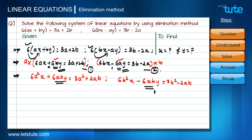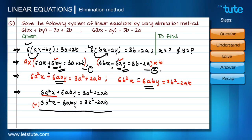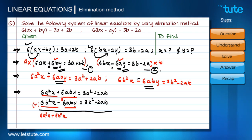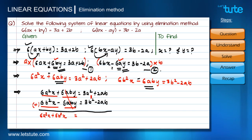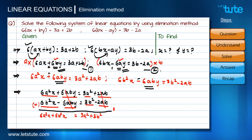Now the coefficients of y are the same with opposite signs, so we can add the two equations to eliminate y. Adding gives: 6a²x + 6b²x on the left side, and 3a² + 3b² on the right side — the y terms cancel out since they are equal and opposite.